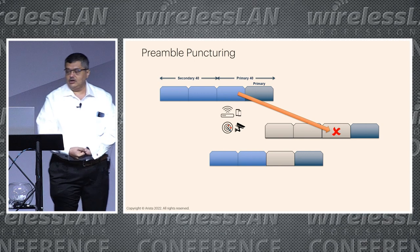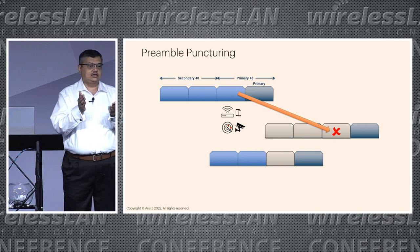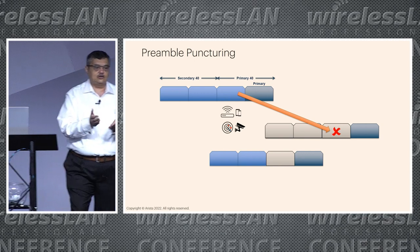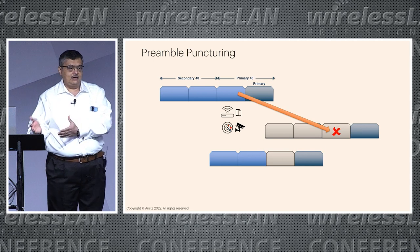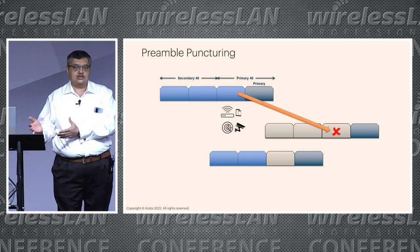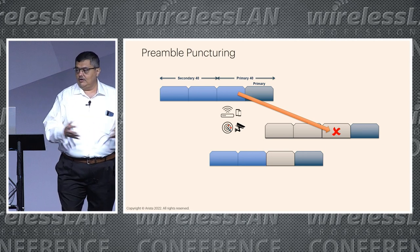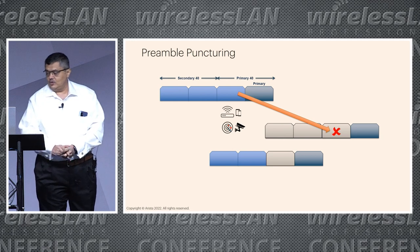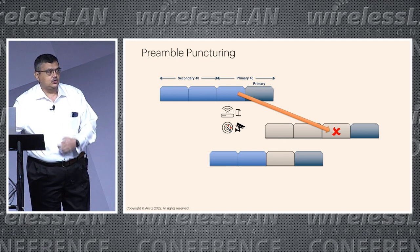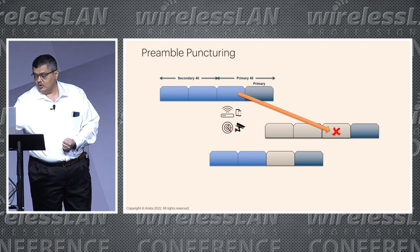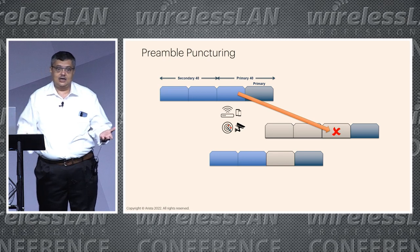Preamble puncturing allows you a way to say: I'm not going to use this one channel that is occupied by somebody else, but still be able to use the rest of the 80MHz channel. That way you have better spectral efficiency and you can use more of the bandwidth that would normally have been idle.